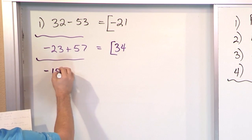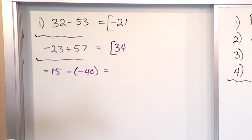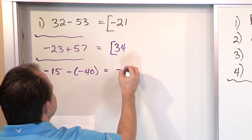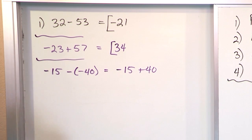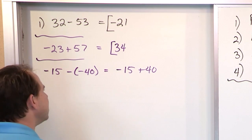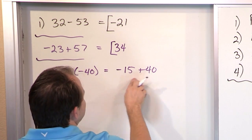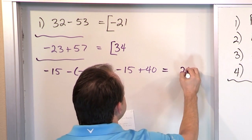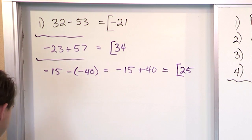What if I had negative 15 minus negative 40? Now I have a double negative here, which means it becomes negative 15 plus 40, because the double negative gets multiplied together — negative times negative gives you positive. Now I'm adding mixed signs, so I subtract: 40 minus 15 is 25. The sign goes with the larger absolute value, which is positive, so the answer is positive 25.